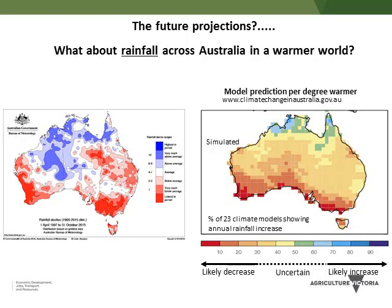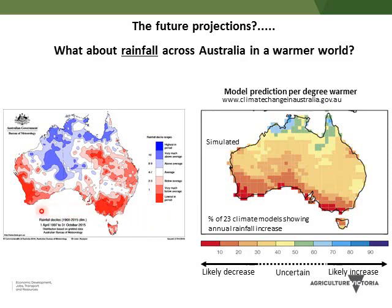On climate change projections looking into the future — when all the climate models are put together in a warmer world, they show southern Australia more likely to get drier, contrasting with northern Australia. In a warmer world the tropics expand from the equator, pushing everything south, meaning southern Australia is likely to be a bit drier. What's interesting is the actual observed April–October rainfall since 1997 has shown those drier conditions down south — which includes us — and that's largely what's been playing out, still with a lot of variability but mainly due to that rising pressure pattern.